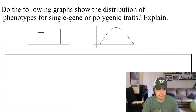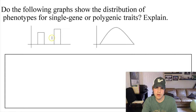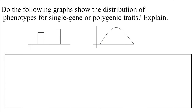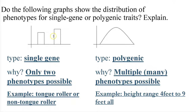Let's quiz ourselves: do the following graphs show the distribution of phenotypes for single gene or polygenic traits? The bar graph showing only two possible outcomes is a single gene trait, because there are only two possible outcomes. Polygenic traits show a wide variety of outcomes — many different phenotypes are possible — which would look like a bell curve.